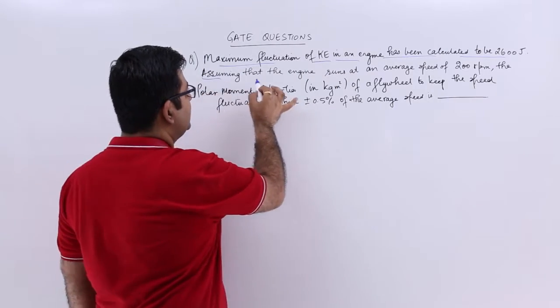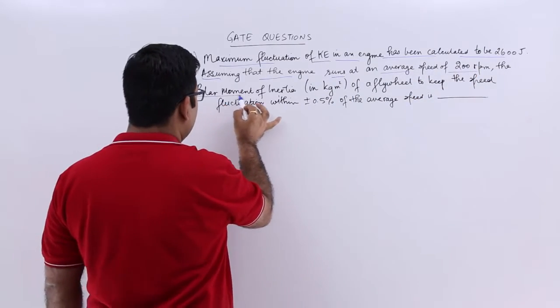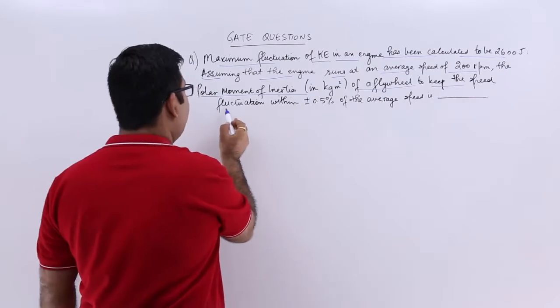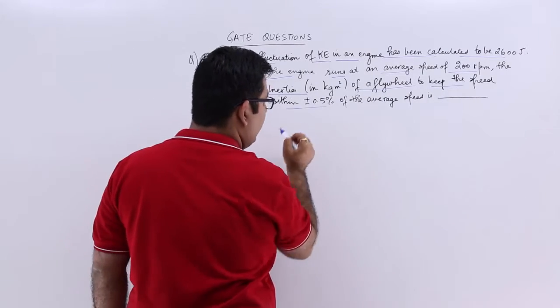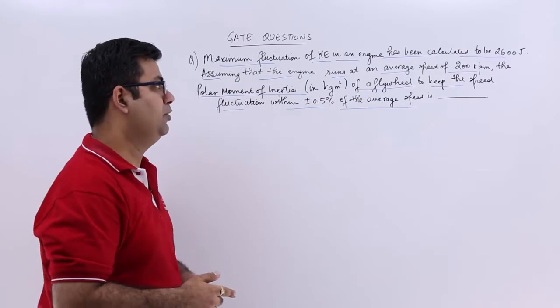Assuming that the engine runs at an average speed of 200 rpm, the polar moment of inertia of a flywheel to keep the speed fluctuation within this range of the average speed is what we have to find out.